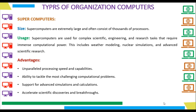And last is supercomputers. Size: Supercomputers are extremely large and often consist of thousands of processors. Usage: Supercomputers are used for complex scientific, engineering, and research tasks that require immense computational power, including weather modeling, nuclear simulations, and advanced scientific research. Advantages: unparalleled processing speed and capabilities, ability to tackle the most challenging computational problems, support for advanced simulations and calculations, and acceleration of scientific discoveries and breakthroughs.